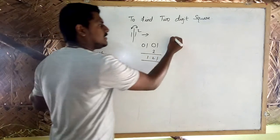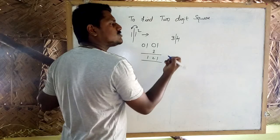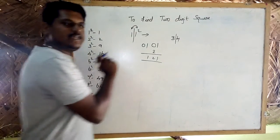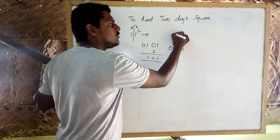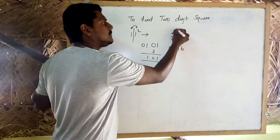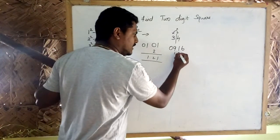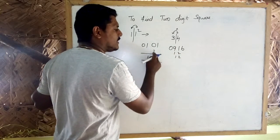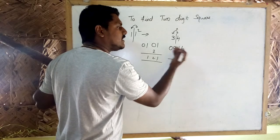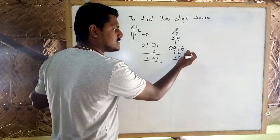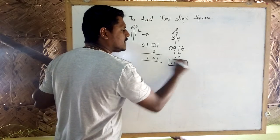For example, 34 square. 4 square is 16. 2 times 4 times 3 is 24, plus 1 carry is 25. The last one is 3 squared, which is 9, plus 2 carry is 11. Here is the last one — you can be 6. Our result: 5 equals 6, 5 equals 6.